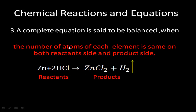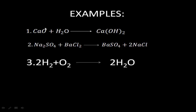For example, Zn + 2HCl gives zinc chloride and hydrogen — zinc and 2HCl are reactants, and zinc chloride and hydrogen are products. Another example: calcium oxide reacts with water to form calcium hydroxide; calcium oxide is also called quick lime. One more example: sodium sulfate reacts with barium chloride to form barium sulfate and sodium chloride. Finally, hydrogen reacts with oxygen to form water.